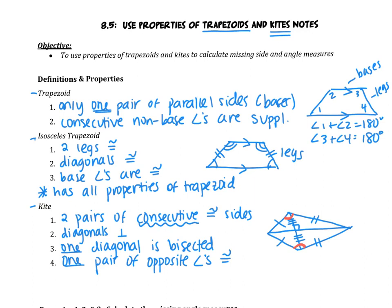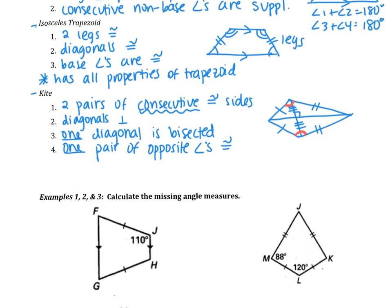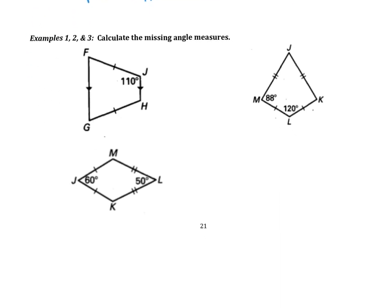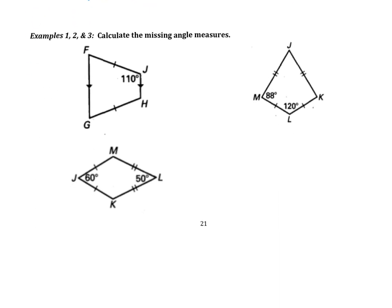So far with our quadrilaterals, we've learned the parallelogram family, now the trapezoid family, and the kite is kind of off on its own. Let's use these properties now and look at examples one, two, and three.